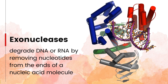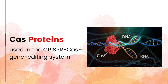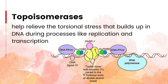Exonucleases degrade DNA or RNA by removing nucleotides from the ends of a nucleic acid molecule, and can be used to trim or clean up DNA ends for further manipulation. DNA methylases add methyl groups to specific nucleotides in DNA, a process known as DNA methylation, which is important for controlling gene expression. Cas proteins, such as Cas9, are used in the CRISPR-Cas9 gene editing system, guided by RNA molecules to target specific DNA sequences and induce double-strand breaks. Topoisomerases help relieve torsional stress that builds up in DNA during replication and transcription, making it easier to work within genetic engineering procedures.